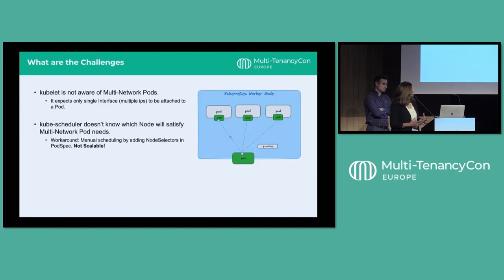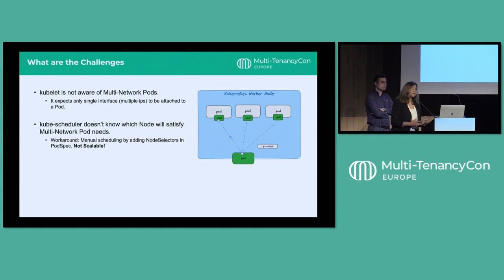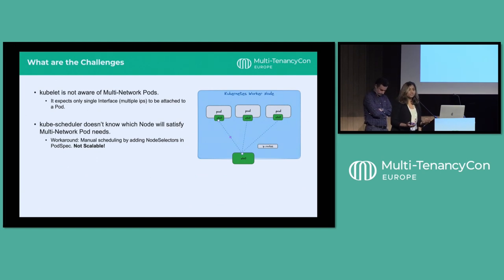Let's talk about the challenges we faced. Two main things: first, kubelet is not aware of multi-network pods. Kubelet internally invokes CNI — the container networking interface, which is invoked by the container runtime to provision networking for pods. When kubelet invokes CNI, it's only aware of a single interface and will provision the default interface on the pod. It can have multiple IPs, but they all belong to the same interface. Similarly, kube-scheduler does not know about special nodes that can satisfy multi-network pod needs.